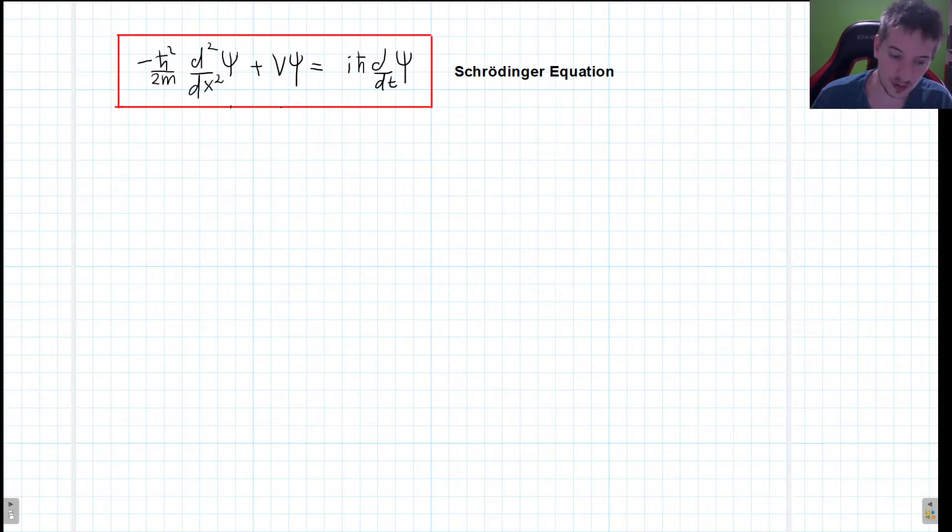you can put into this equation the potential for such a configuration and then you can solve this equation, which is actually something we will do later on, and you can find what the wave function is for an electron in a hydrogen atom,